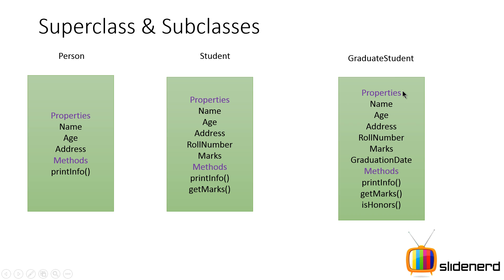GraduateStudent is a subclass of Student. It inherits name, age, address, roll number, and marks from the superclass, and adds its own field graduation date. It also has printInfo, getMarks inherited, plus its own isHonors method that tests whether the student passed with honors. So we have three classes: Student is a subclass of Person, and GraduateStudent is a subclass of Student.